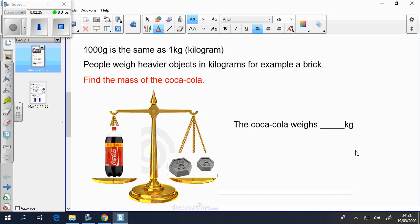Today we're going to be looking at kilograms. 1000 grams is the same as 1 kilogram, which is written as kg. People weigh heavier objects in kilograms, for example, which is really heavy. You would tend to weigh it in kilograms and not grams because it's too heavy.